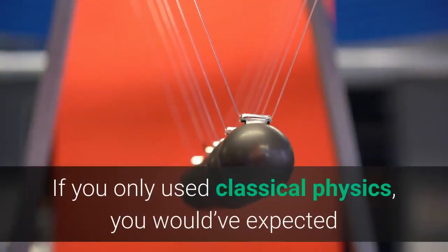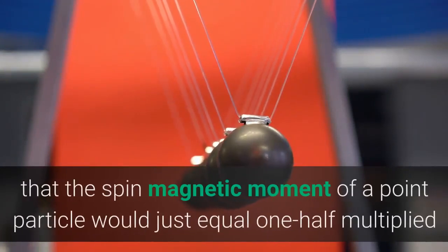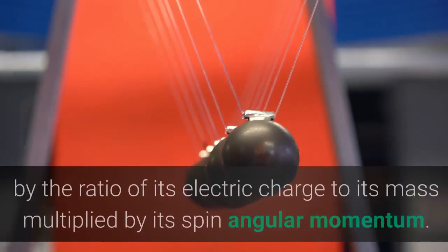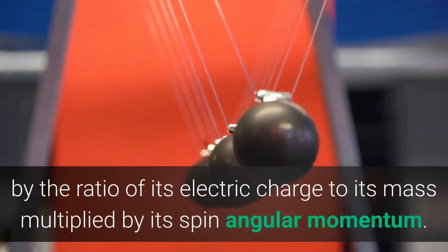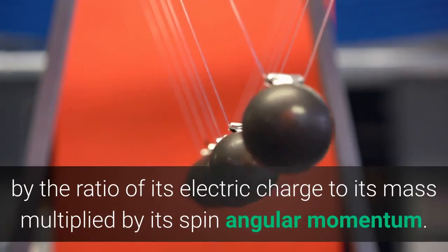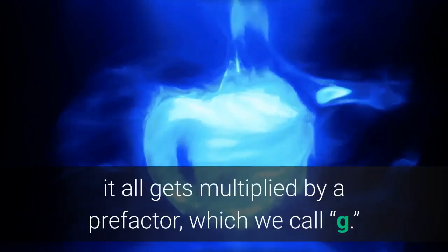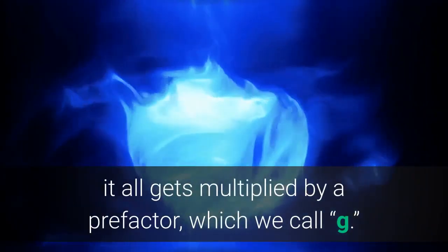If you only used classical physics, you would have expected that the spin magnetic moment of a point particle would just equal one-half multiplied by the ratio of its electric charge to its mass multiplied by its spin angular momentum. But, because of purely quantum effects, it all gets multiplied by a prefactor, which we call G.